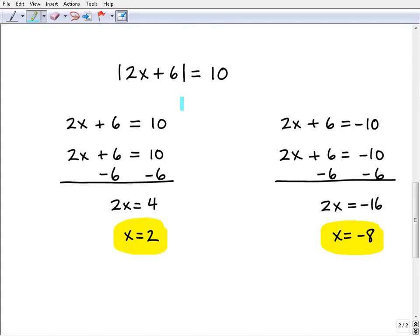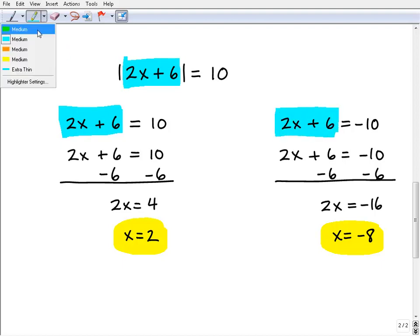Those are the solutions, but let's quickly talk about how we set up and solve this problem. The basic gist of solving an absolute value equation is to take what's inside the absolute value equation, which is 2x plus 6, and set it equal to the positive and negative version of this number here, which would be 10 and negative 10.